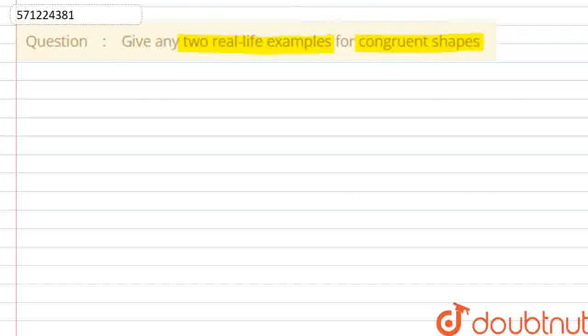So basically what are congruent shapes? Congruent shapes are basically when both the shapes have same sides and same angles. Then the shape is set to be congruent. So here we can take the examples of two real life examples.